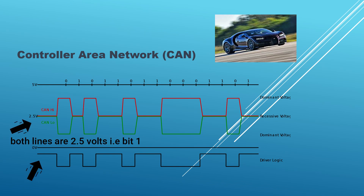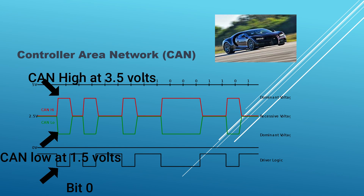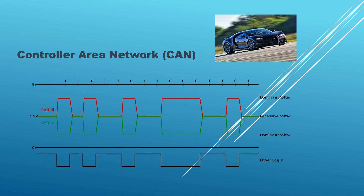Normally when the bus is idle, both the lines are at 2.5 volts, and when the voltage difference between these lines is zero, it represents bit one, which is considered as the recessive bit in CAN. And when the voltage difference is 2 volts — that is CAN high at 3.5 volts and CAN low at 1.5 volts — it represents bit zero, which is considered as the dominant bit in CAN.